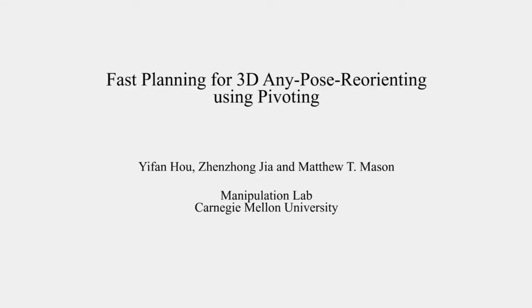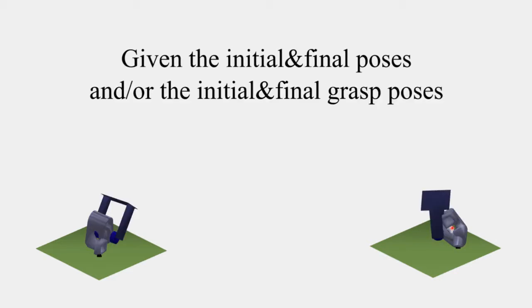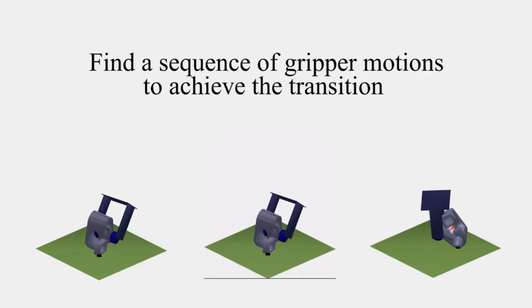In this work, we propose a method for solving three-dimensional reorienting problems. For an object of any shape, the user specifies the three-dimensional initial and final poses. The user might also specify the initial and final grasp poses. The problem for us is to find a sequence of gripper motion to achieve the transition.